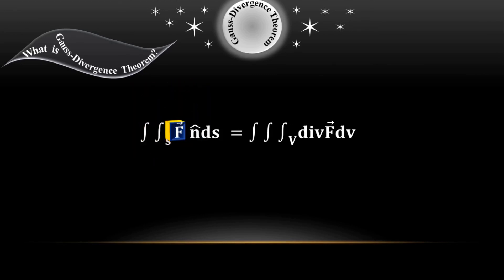F is the differential vector point function and n is unit normal vector. This is divergence.